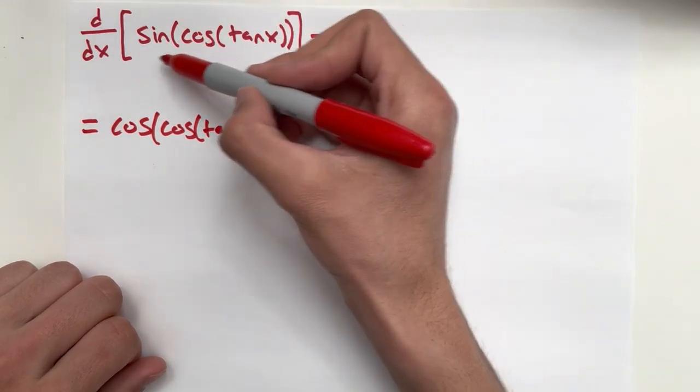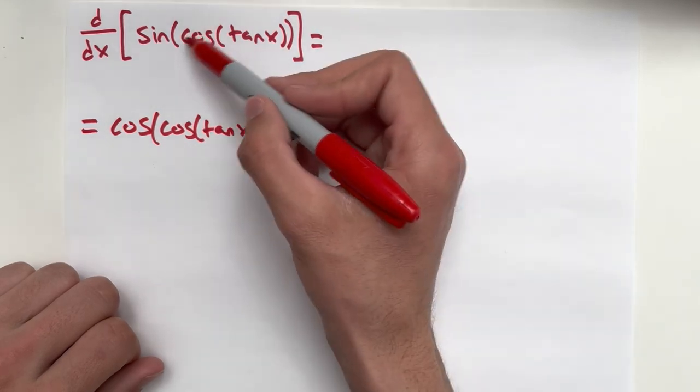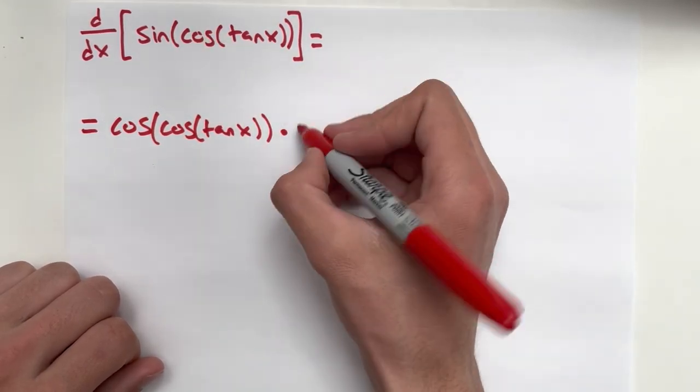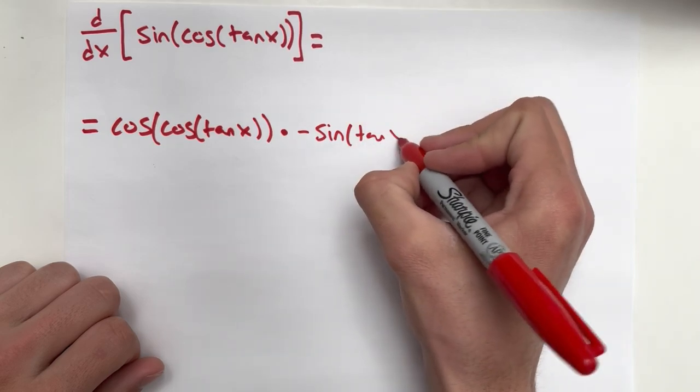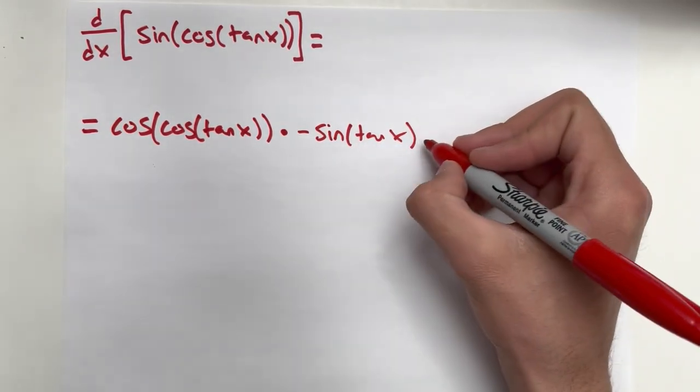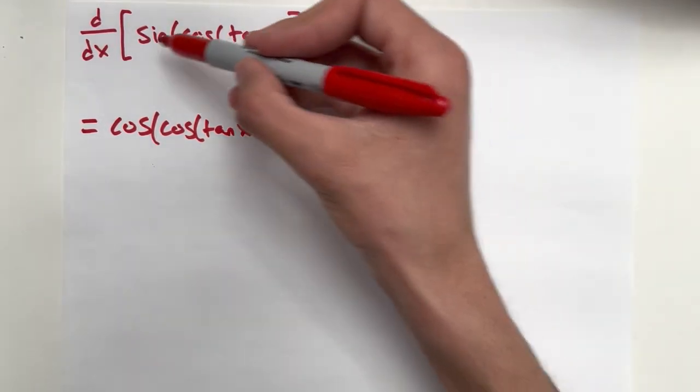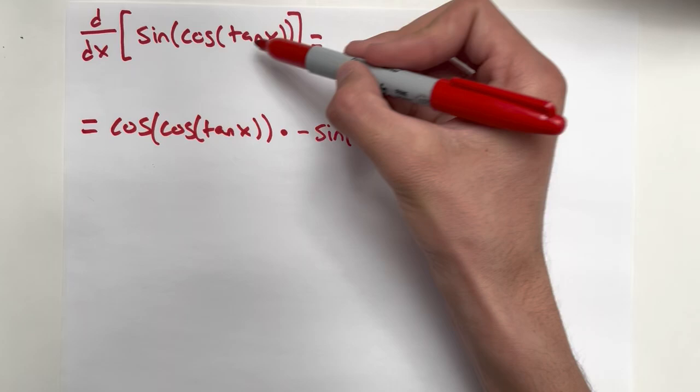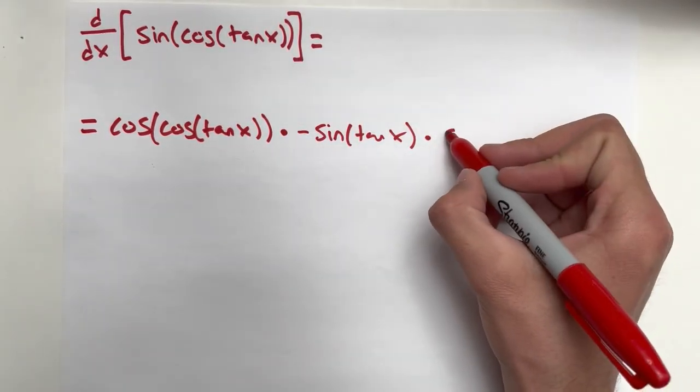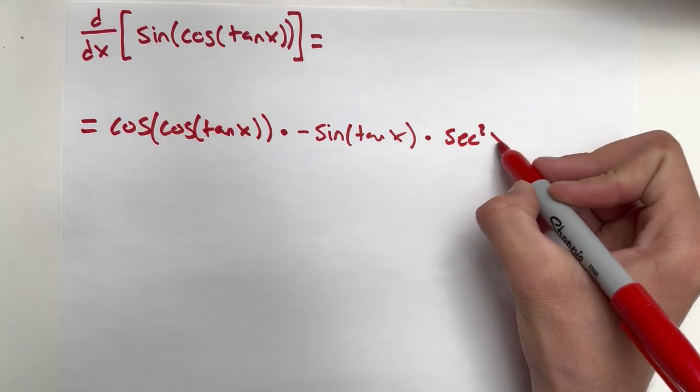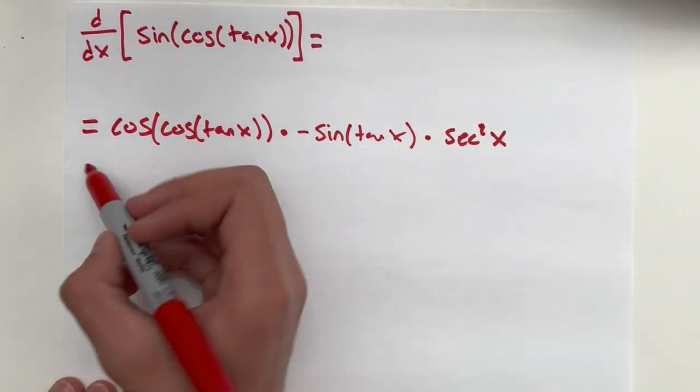So the derivative of this inside, so we differentiate the outside, now the inside, and we're going to keep going. So derivative of cosine is negative sine tangent x. And then we need to multiply again by the chain because now we need to multiply by the derivative of this inside. So we did this one, we did this one, now we're doing tangent x. So the derivative of tangent x we all know to be secant squared x.